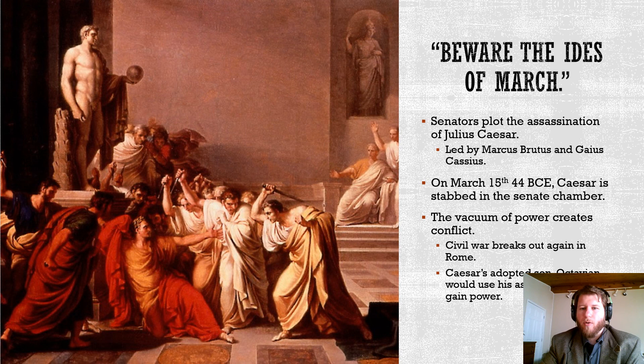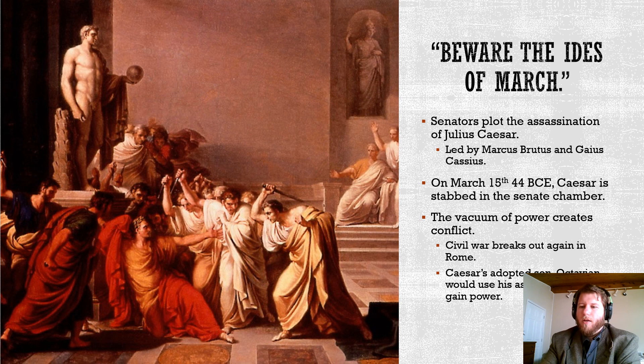This creates a power vacuum and civil war is going to break out in Rome again. One of the most important figures at this point is Mark Antony — Caesar's master of wars, his best friend, and one of his most trusted generals. He actually discovers the plot to assassinate Caesar just moments before it happens, goes rushing to save him just as the gate is dropped in front of him, and gets to watch Caesar be assassinated. There's nothing he can do.